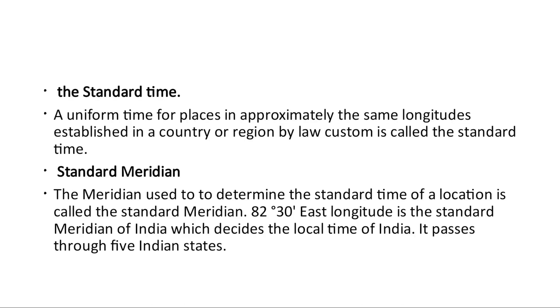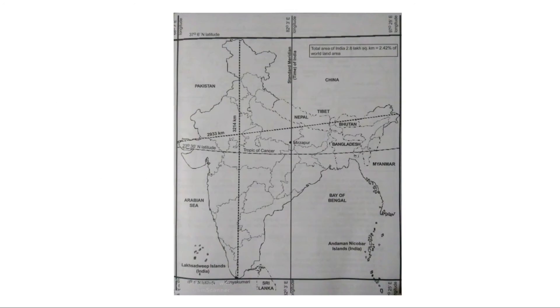Next is standard time and standard meridian. You can expect this for explaining the terms — Tropic of Cancer, standard meridian and standard time. In this map, you will be able to find out the longitudes and the latitudes. The neighbouring countries are marked here.